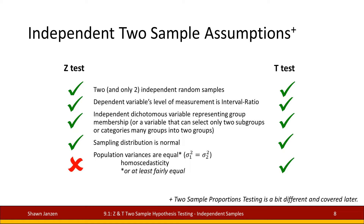We also assume that the sampling distribution is normal following the central limit theorem, and lastly that the population variances are equal. This isn't much of a concern for the Z-test but it is for the T-test, and we'll talk more about population variances in a future video. Side note: everything just said about assumptions applies to the means version — proportions testing follows closely but will show differences when we get to that video.